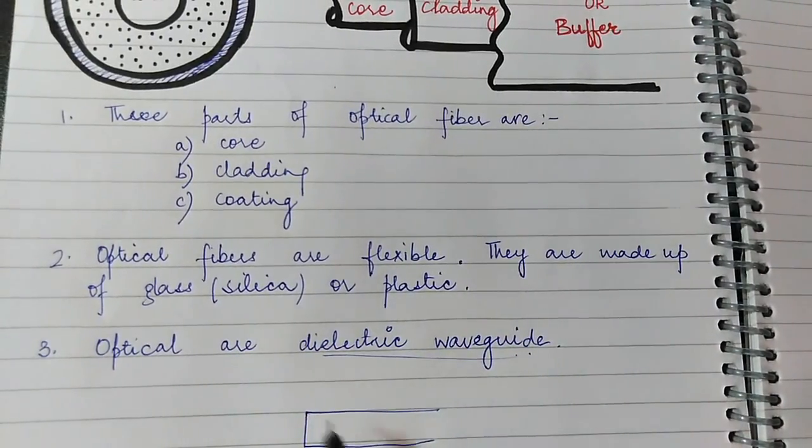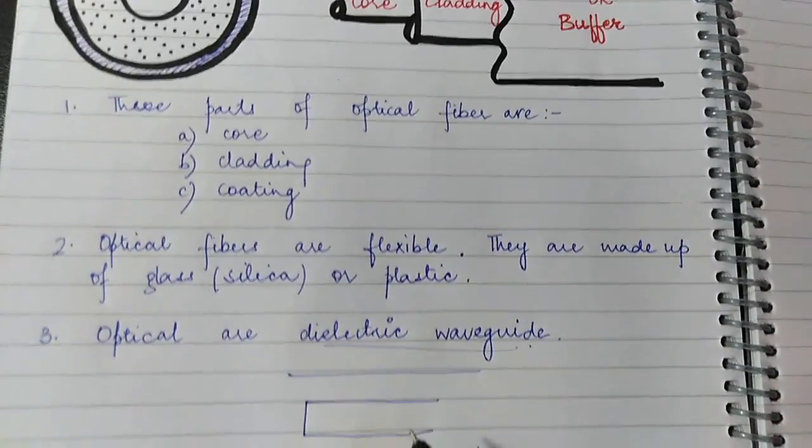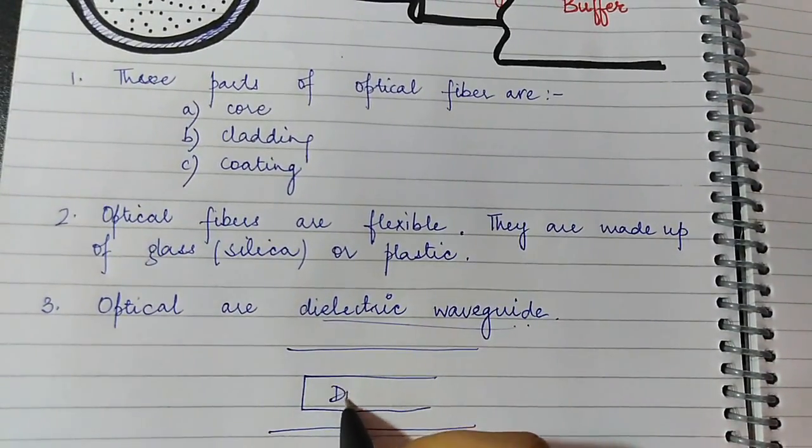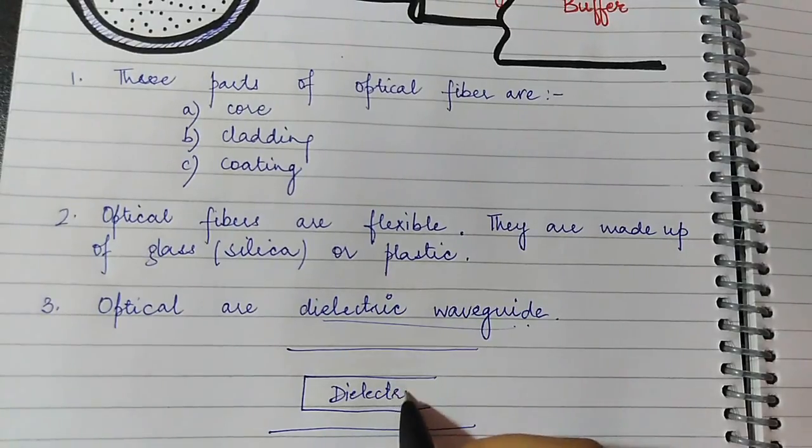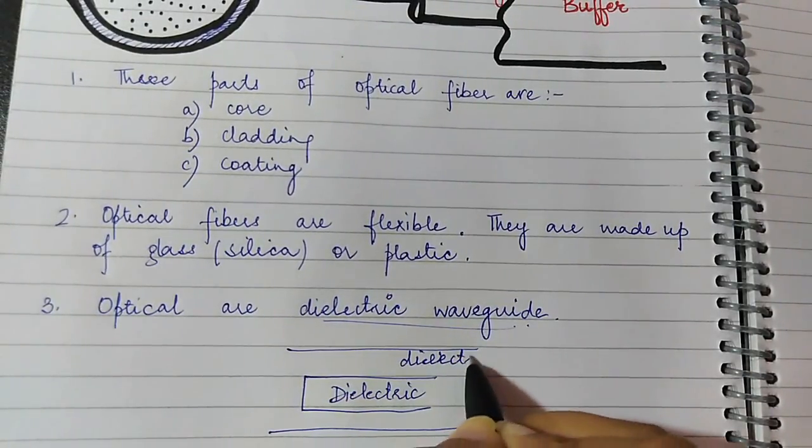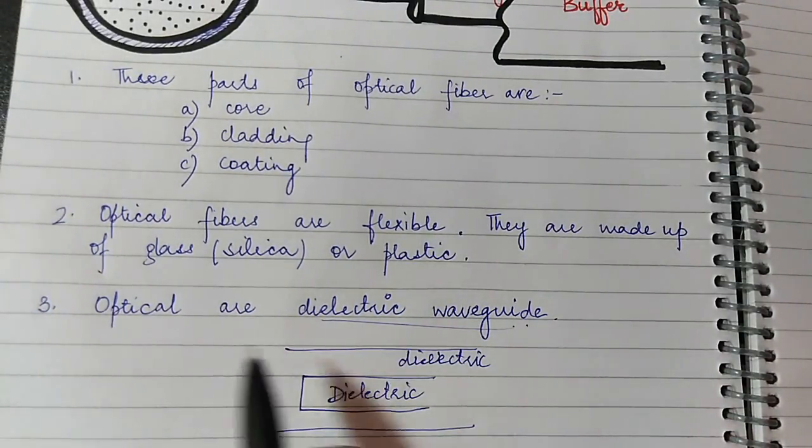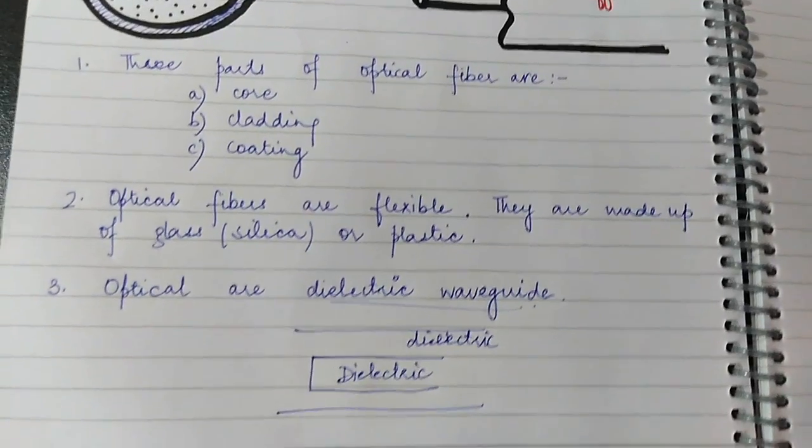Like dielectric, it is surrounded by another dielectric material. Once a dielectric material is surrounded by another dielectric material, this forms a dielectric waveguide. So the optical fibers are dielectric waveguides.